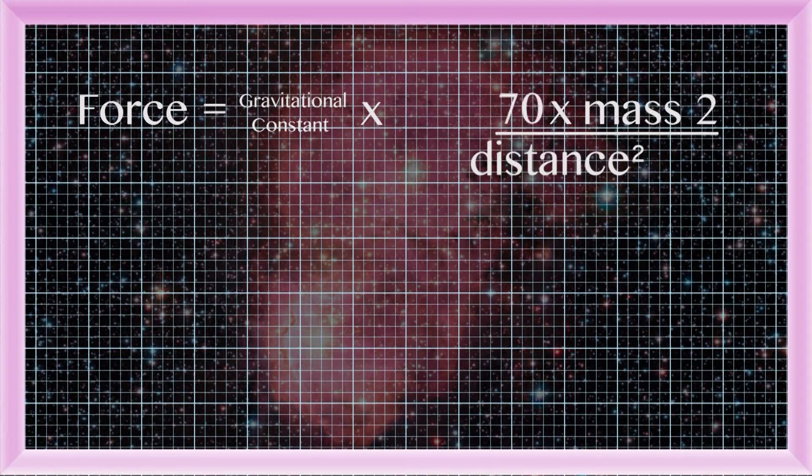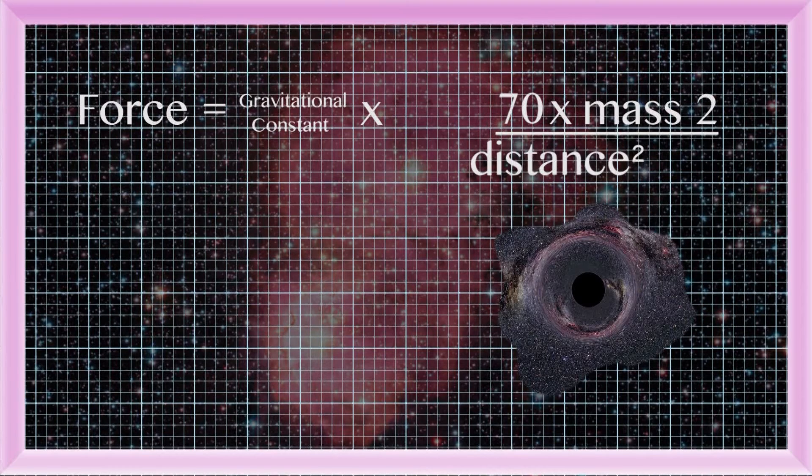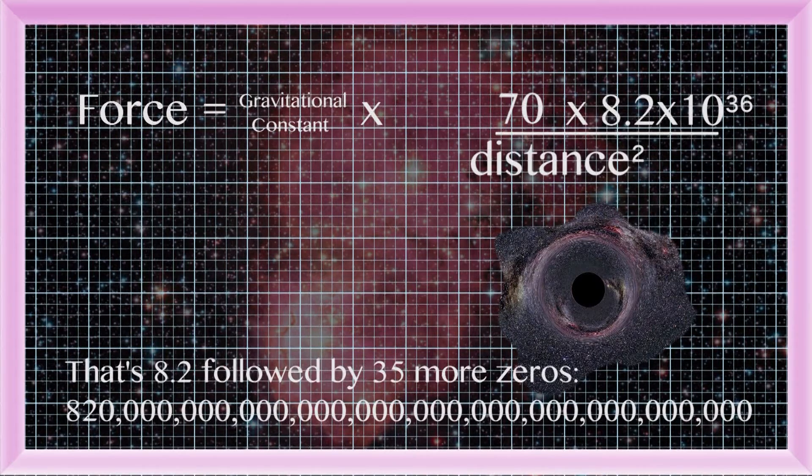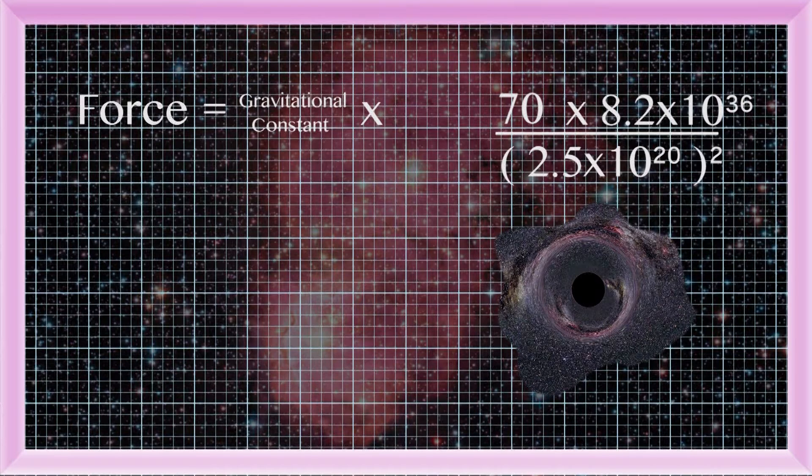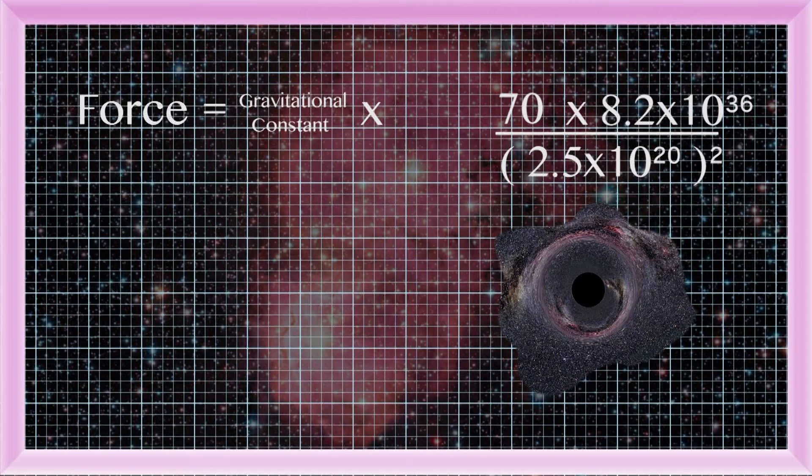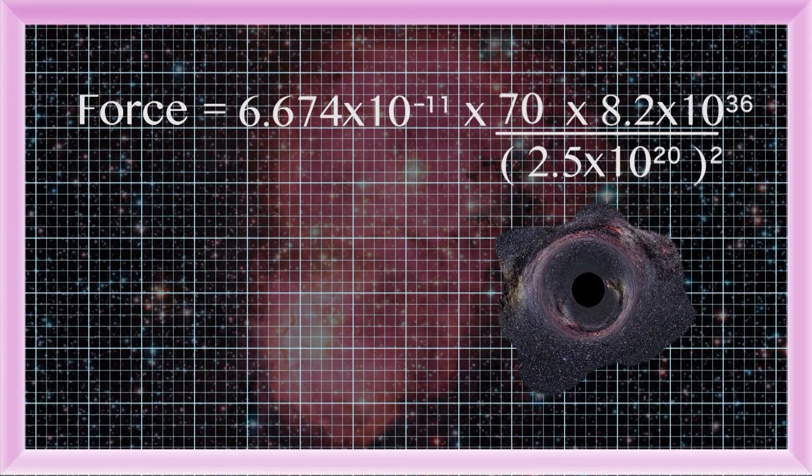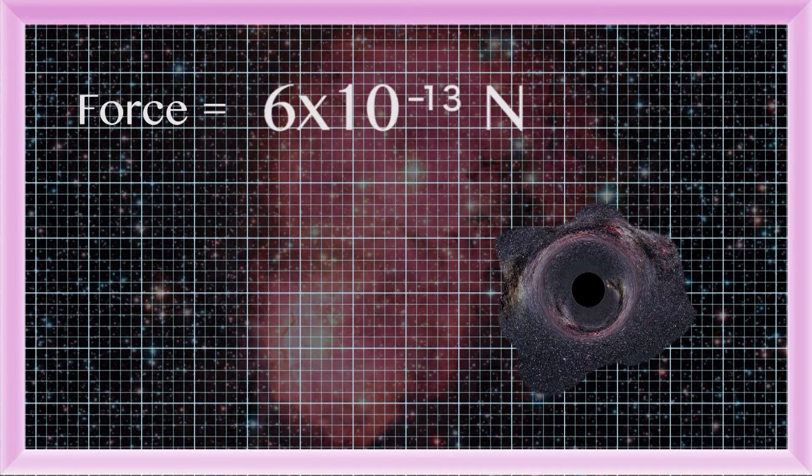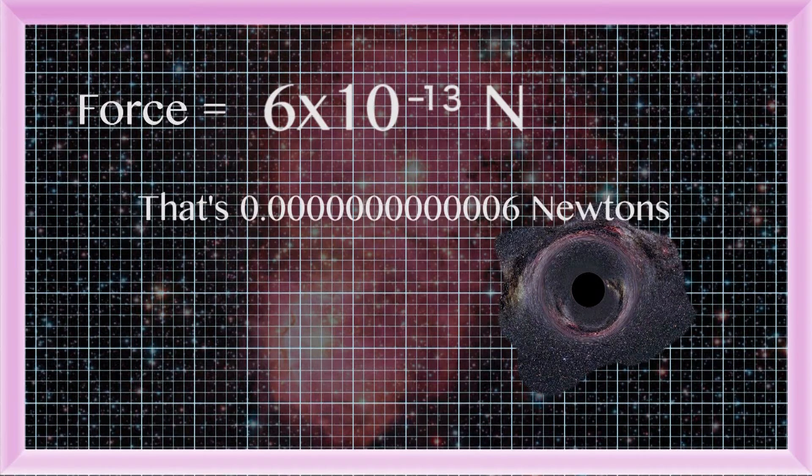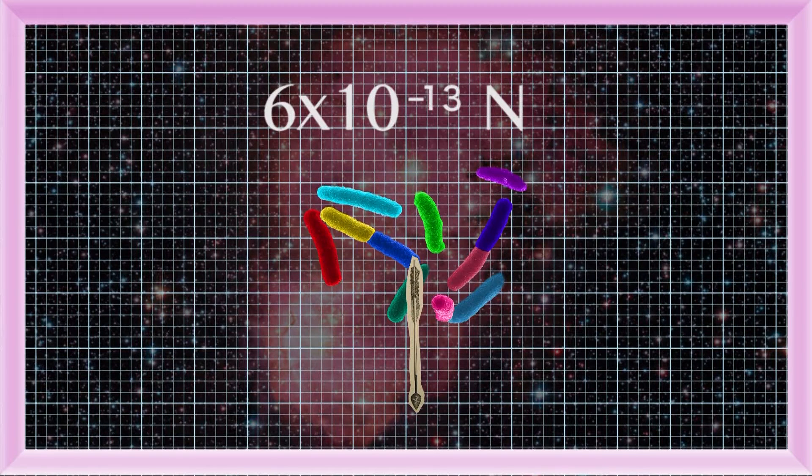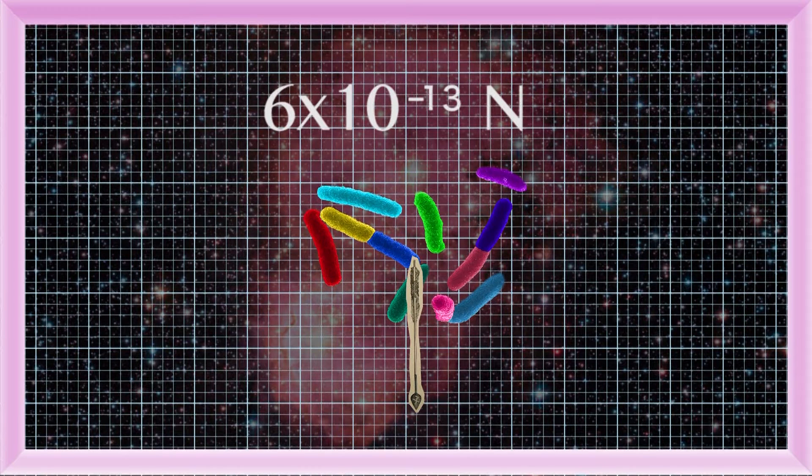Now your mass is 70 kilograms. The supermassive black hole weighs 8.2 times 10 to the 36 kilograms. The distance is 2.5 times 10 to the 20 meters. And the gravitational constant is this number. So, you and the black hole are experiencing a force of 6 times 10 to the minus 13 newtons right now toward each other. For reference, that's about the same as the weight of 60 microscopic E. coli.